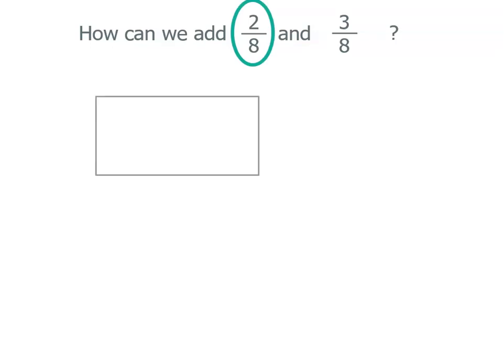Our first number has a denominator of 8, so we're going to break it into 8 equal parts. Now each of those parts is 1 eighth. Our numerator is 2, so we're going to shade 2 of the 8 parts.